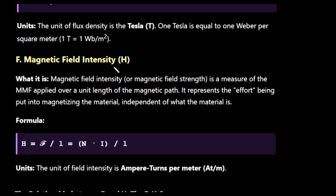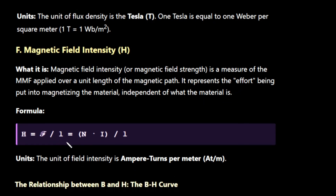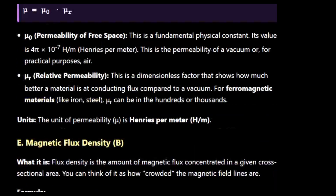Finally, magnetic field strength or magnetic field intensity, represented by capital H. Magnetic field intensity is a measure of the MMF applied over a unit length of the magnetic path. It represents the effort put into magnetizing the material, independent of what material is used. The formula is H = F / L = (N × I) / L, where N is the number of turns, I is the current, and L is the length. The unit for magnetic field intensity is ampere-turns per meter.